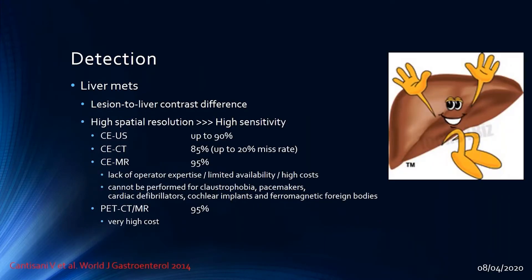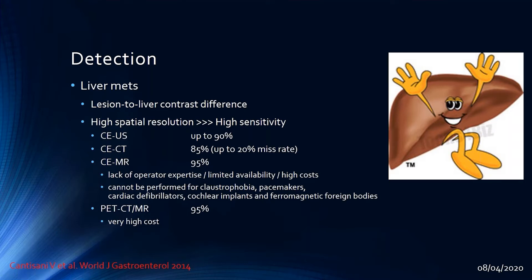For detection of liver metastases, various imaging procedures exist. Contrast-enhanced ultrasound has a sensitivity of up to 90%, contrast-enhanced CT around 85% with up to 20% miss rate, and contrast-enhanced MRI up to 95% but with limited availability, high costs, and contraindications such as claustrophobia, pacemakers, cochlear implants, and ferromagnetic bodies. PET-CT and PET-MR have high sensitivity but also high costs.